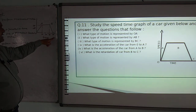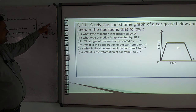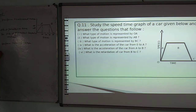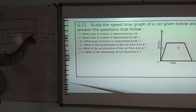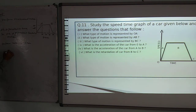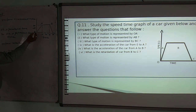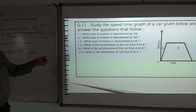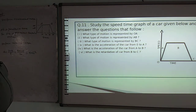The fourth question asks: what is the acceleration of the car from 0 to A? Using a = (v − u) / t, with v = 40 m/s, u = 0, and t = 10 seconds, we get a = 40/10 = 4 metres per second squared.